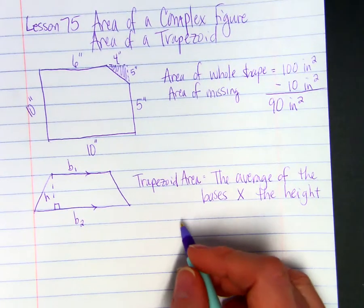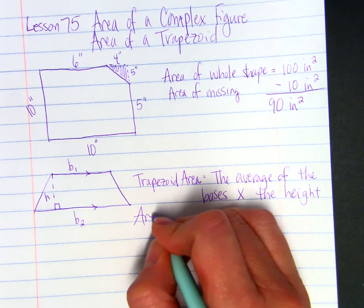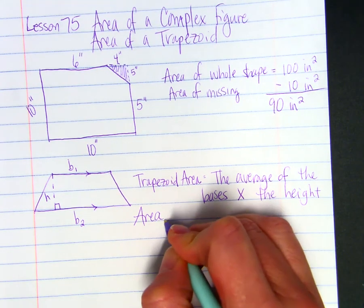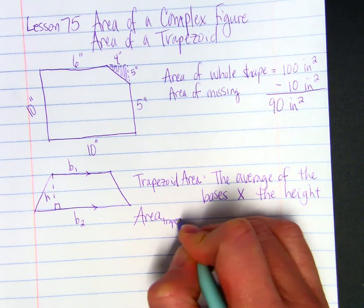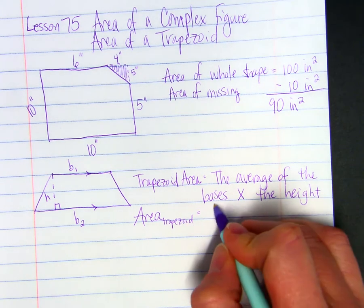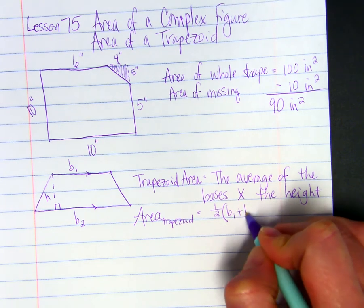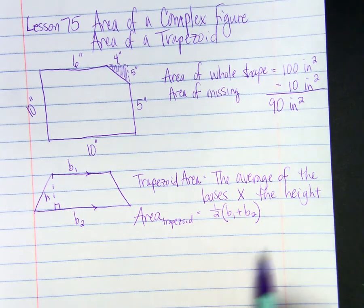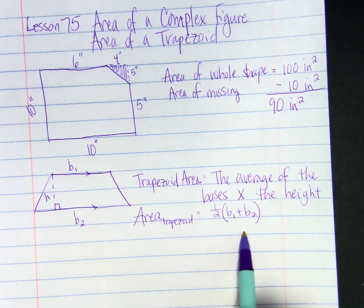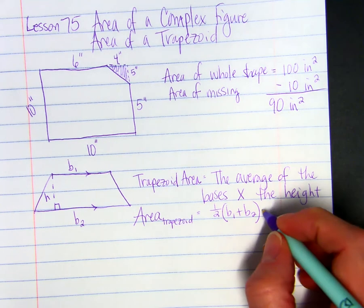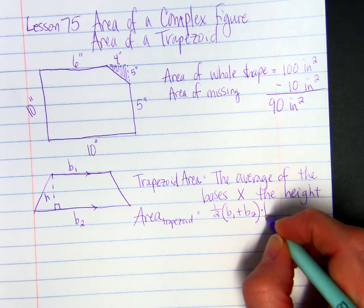Sometimes you have it written as area sub trapezoid. You'll see it written as one-half, in parentheses, base sub 1 plus base sub 2. So that's how we find average. We add the two together and divide by 2, and then we multiply that times the height.